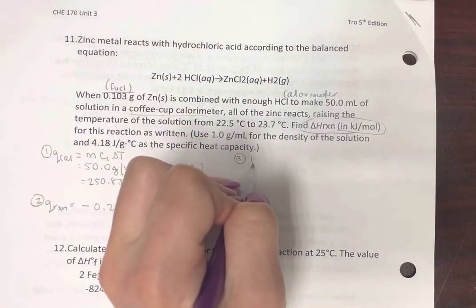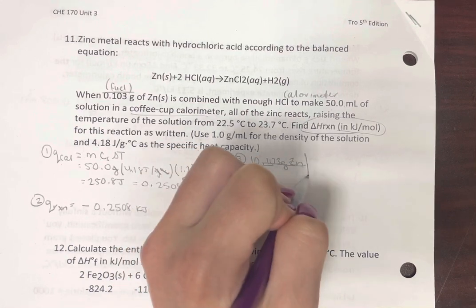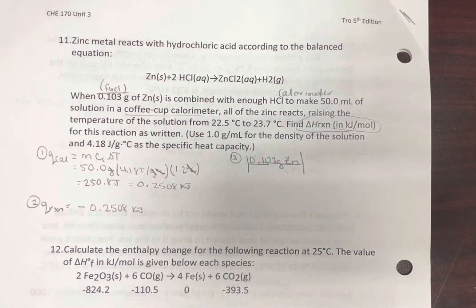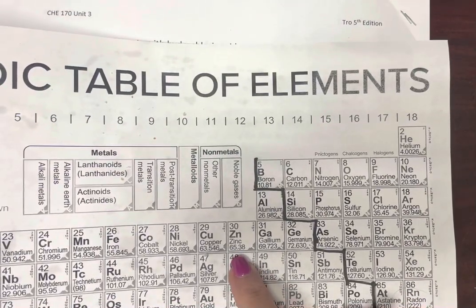So here we have zinc, 0.103 grams of zinc. We'll need our periodic table. Molar mass of zinc, 65.38.